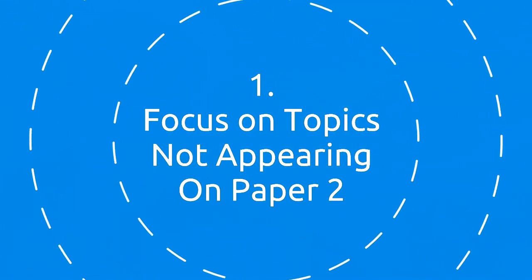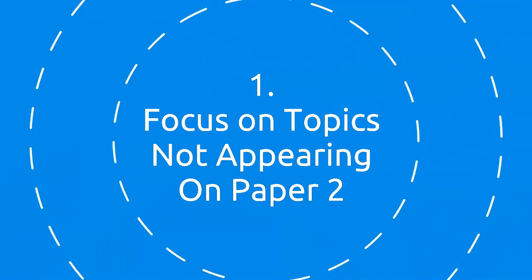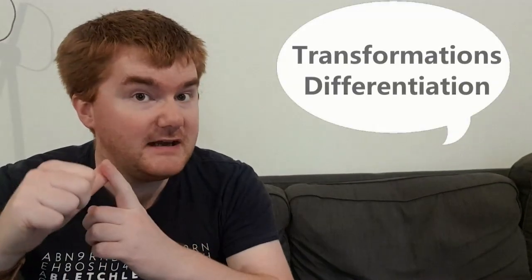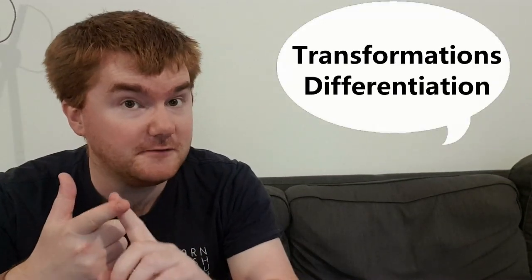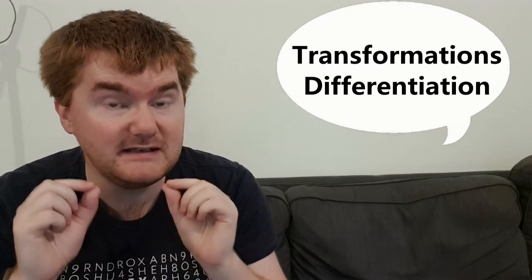Number one: take the Paper 2 topics and think about what topics have appeared so far, then identify which topics have not appeared, as they are more likely to appear on Paper 4. From the comments across different variants of the paper, things like transformations and differentiation have not appeared yet — so find those missing topics and really focus your revision on them.